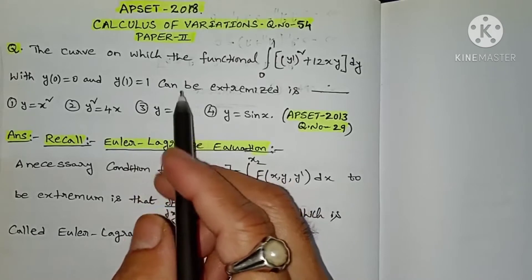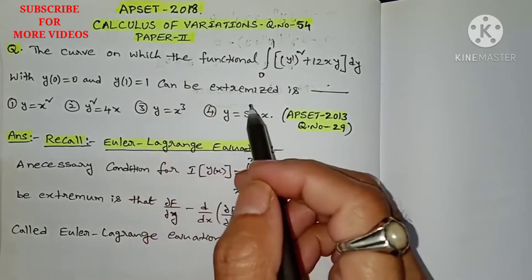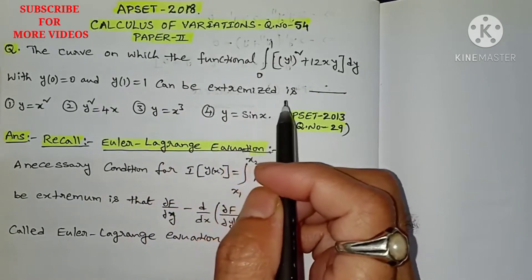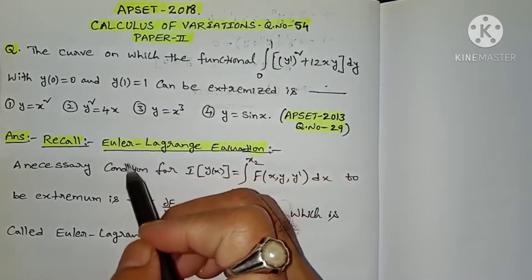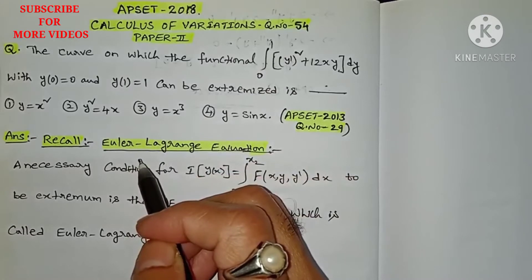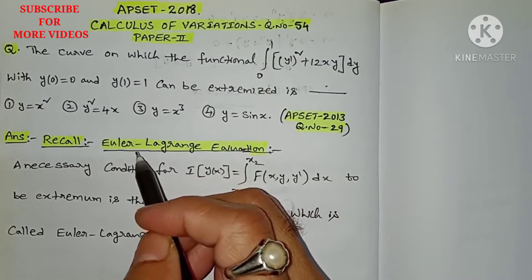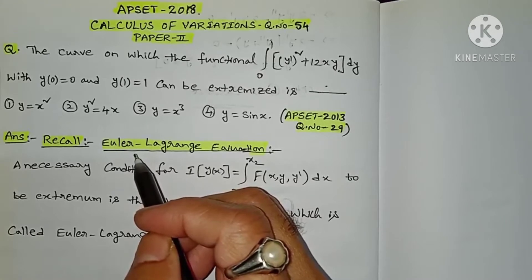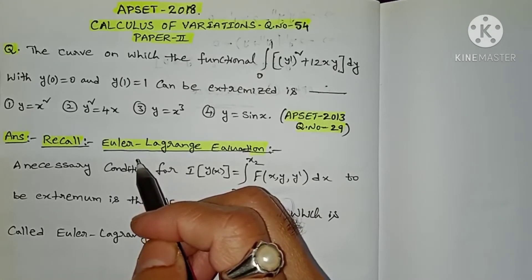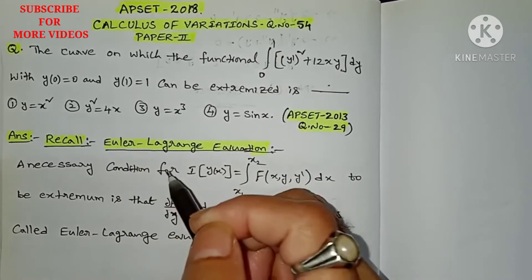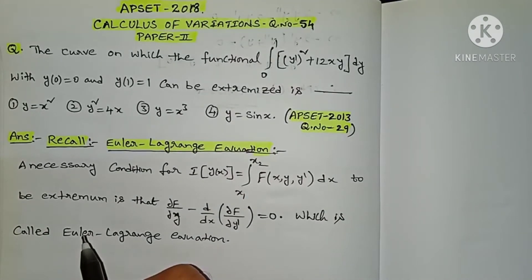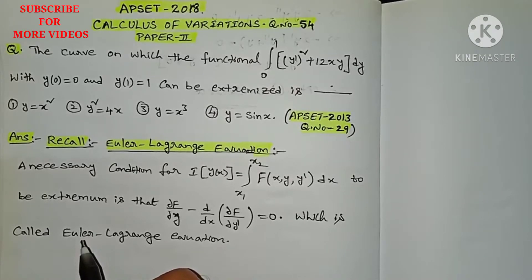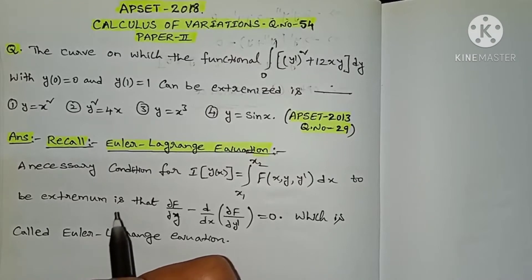This is a question regarding whether the functional is extremized or not, and this is an application of the Euler-Lagrange equation. We have to recall the Euler-Lagrange equation. In the previous video, we already discussed the calculus of variations basics, including the Euler-Lagrange equation and its different forms. I will provide the link to that video in the description box.